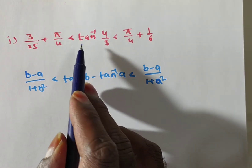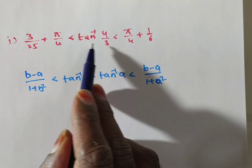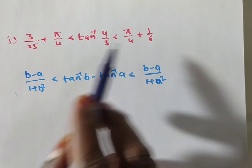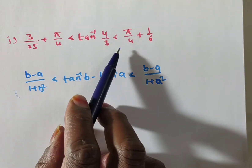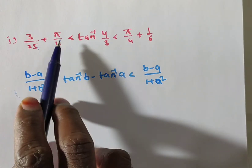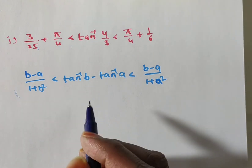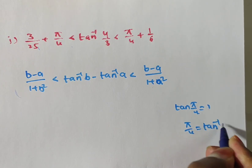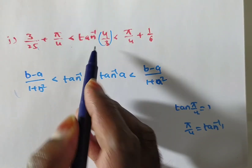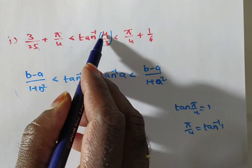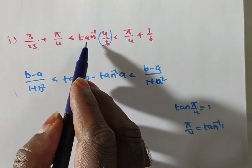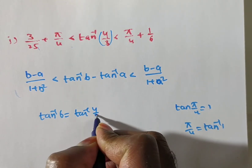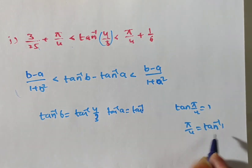Here tan inverse b corresponds to tan inverse (4/3), and tan inverse a corresponds to tan inverse 1 — since tan(pi/4) equals 1, we can write pi/4 as tan inverse 1. So b equals 4/3 and a equals 1. Substituting: (4/3 minus 1) by (1 plus (4/3) squared) is less than tan inverse (4/3) minus tan inverse 1, which is less than (4/3 minus 1) by (1 plus 1 squared).